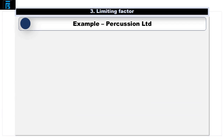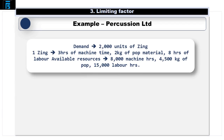Let's consider this scenario. Percussion Limited has demand for 2,000 units of product Zing. Each unit of Zing takes 3 hours of machine time, 2 kg of material Pop, and 8 hours of labour. Percussion has the following resources available: 8,000 machine hours, 4,500 kg of Pop and 15,000 hours of labour.